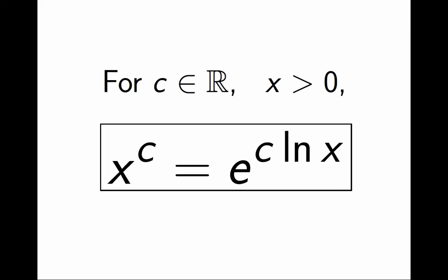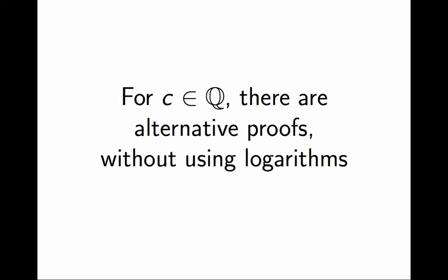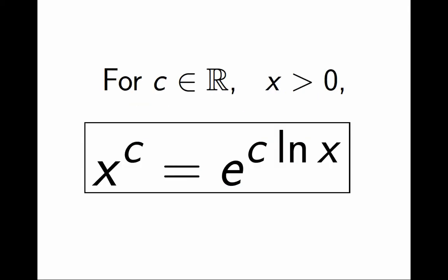Well, it depends. If we are happy to stick only to rational exponents c, then there are alternative proofs for the Power Rule without using logarithms. But if we want to prove the Power Rule for real exponents, there is no way around it.